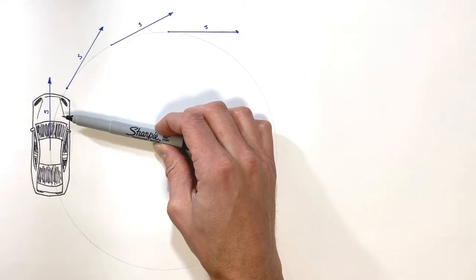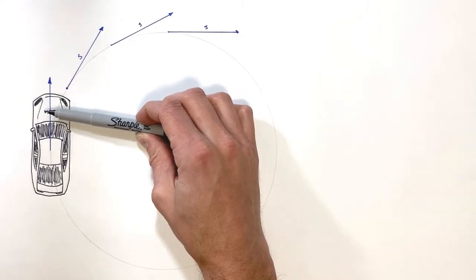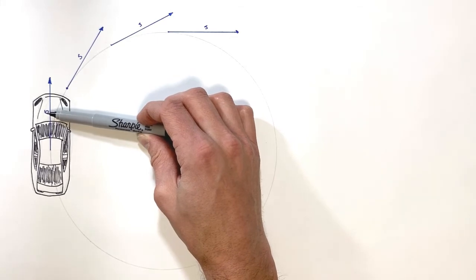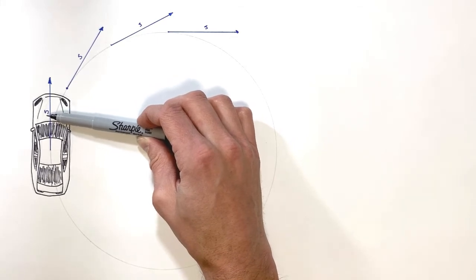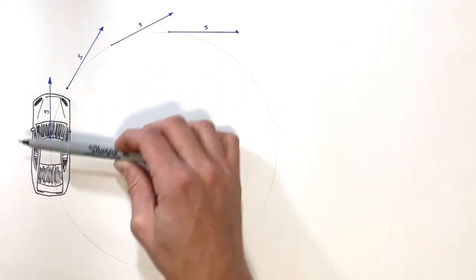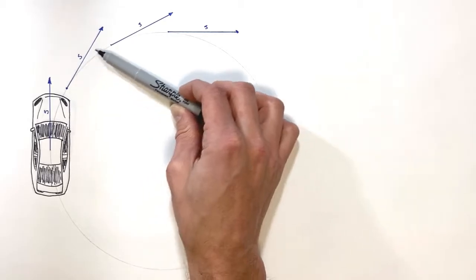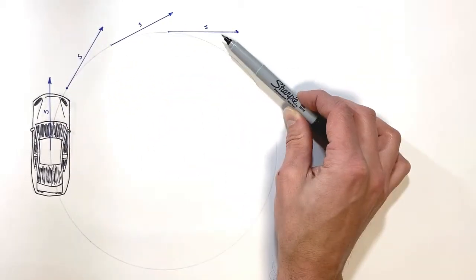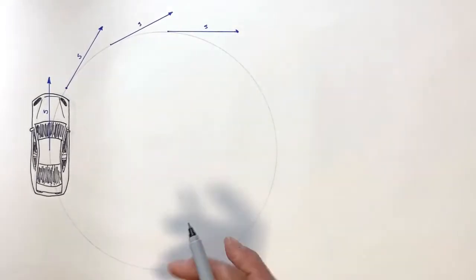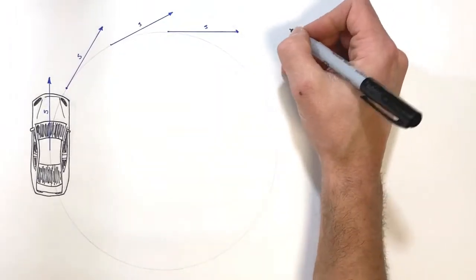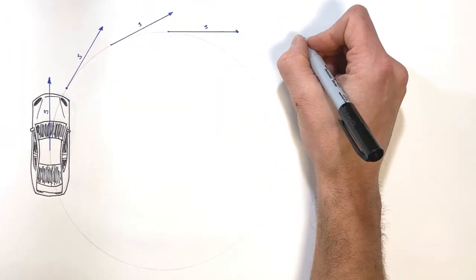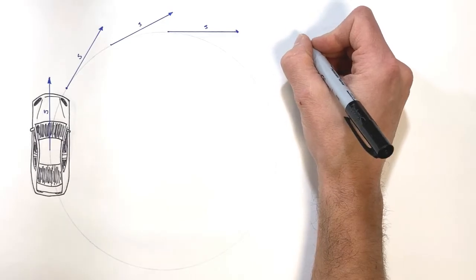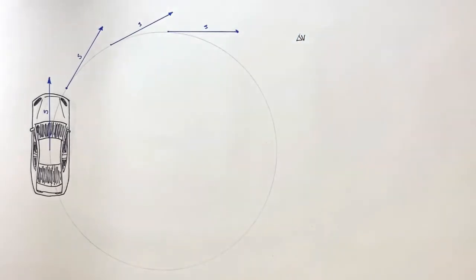Now, to back up to the very beginning of when we first started talking about physics: speed versus velocity. Remember, speed is just a magnitude, whereas velocity has both a magnitude and a direction. So we can see as this car goes around a corner the speed is not changing, but the direction is, and so this is in fact what we would say is a change in velocity.